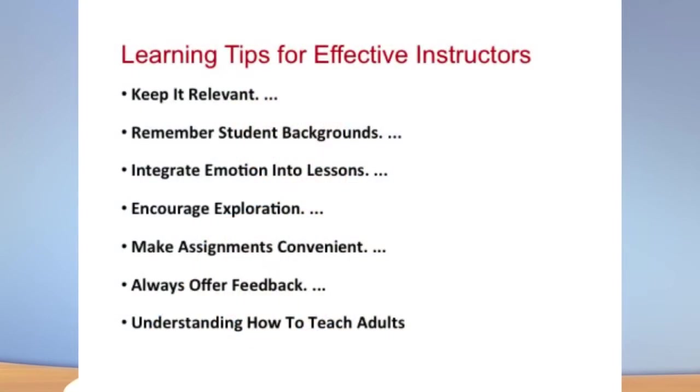Now, certain tips for effective instruction that as a teacher we must know. We have seen important characteristics of adult learners and the sources that give them internal motivation. As a teacher, we must know some tips to become more effective. Number one: keep it relevant. Whatever you teach in the classroom, try to give examples and relate the concepts to their practical life — give real examples from current situations — and they will be more interested.